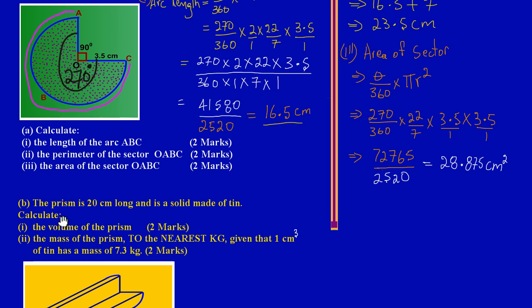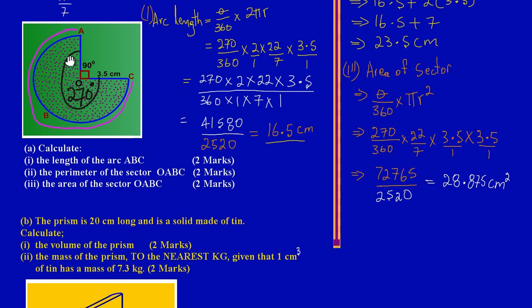We're asked to calculate the volume of the prism, and that's an easy two marks. Let's analyze this diagram. If you notice, in part A we had calculated the area of this cross-section here and got it to be 28.875 centimeters squared.